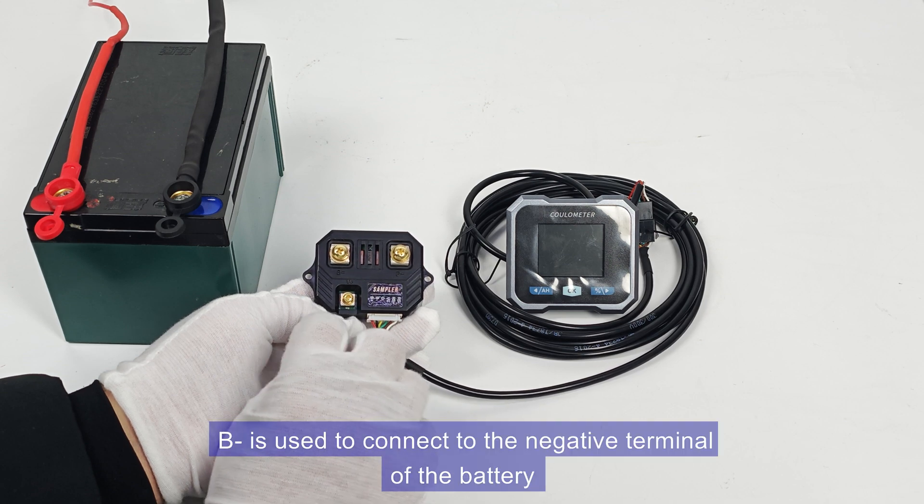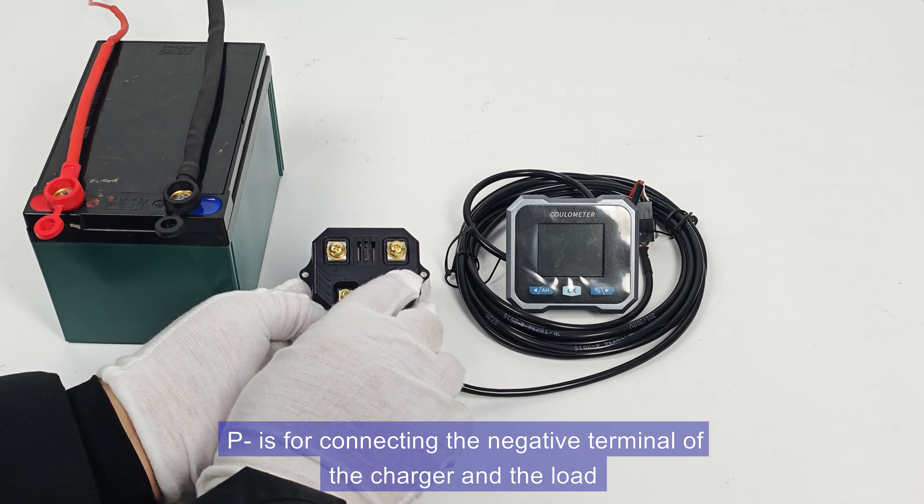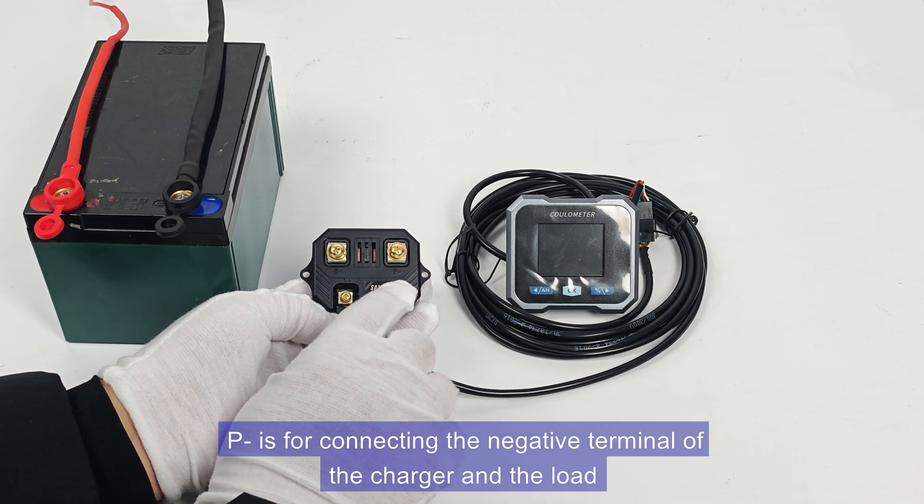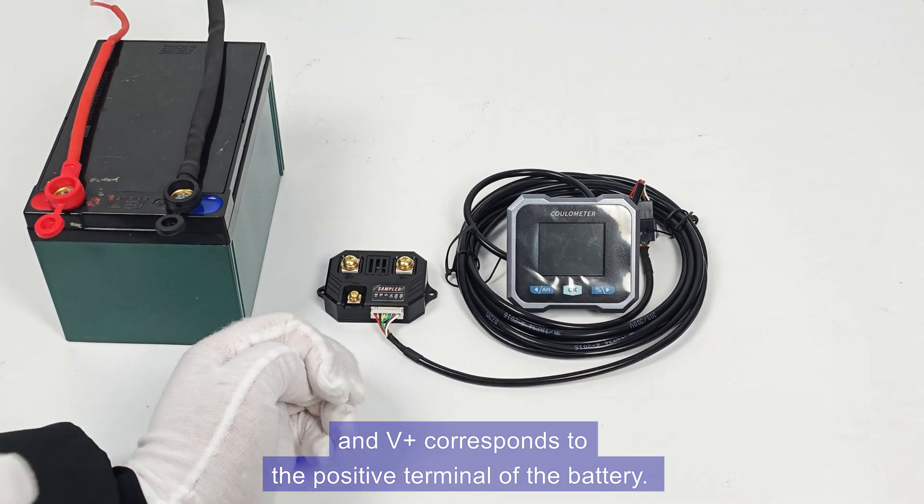Here, B is used to connect to the negative terminal of the battery, P is for connecting the negative terminal of the charger and the load, and V+ corresponds to the positive terminal of the battery.